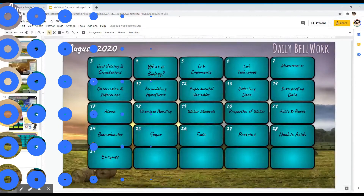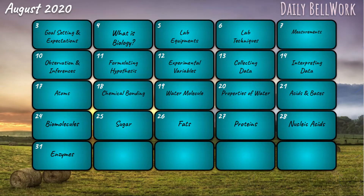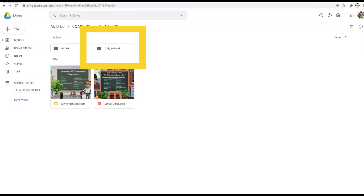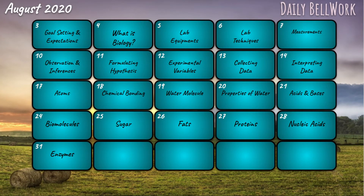We are now ready to organize the dates and the topics in our bell work calendar. Please be aware that the biology topics I have indicated in the calendar are in no way the most accurate way of organizing biology topics. To begin, we will go to our Google Drive and create a folder for our bell work. Now that our calendar is ready, we can start creating our bell work and linking them into our calendar.